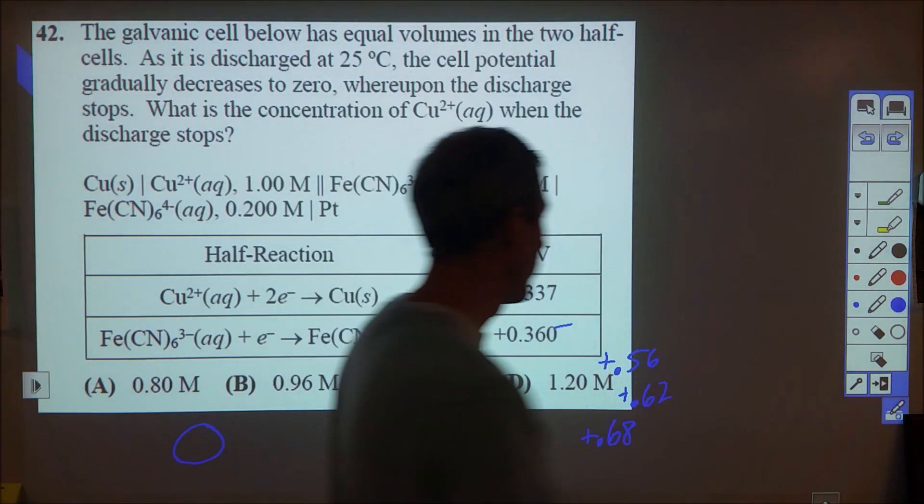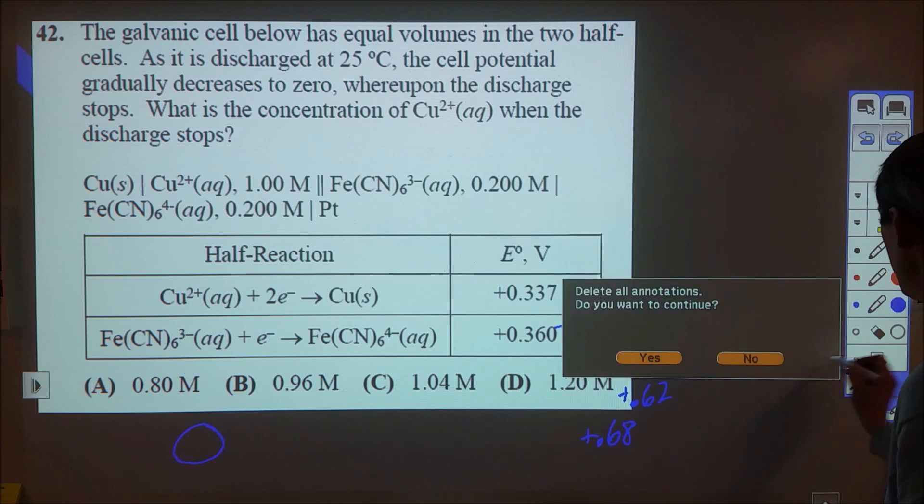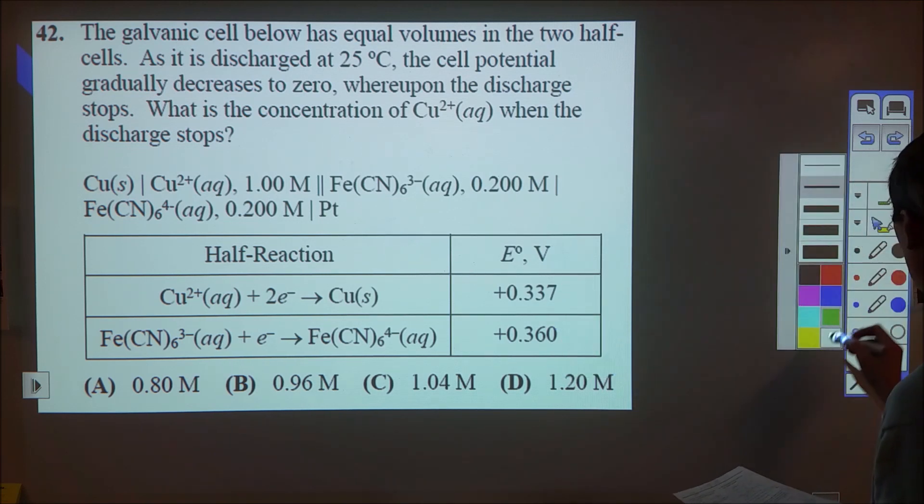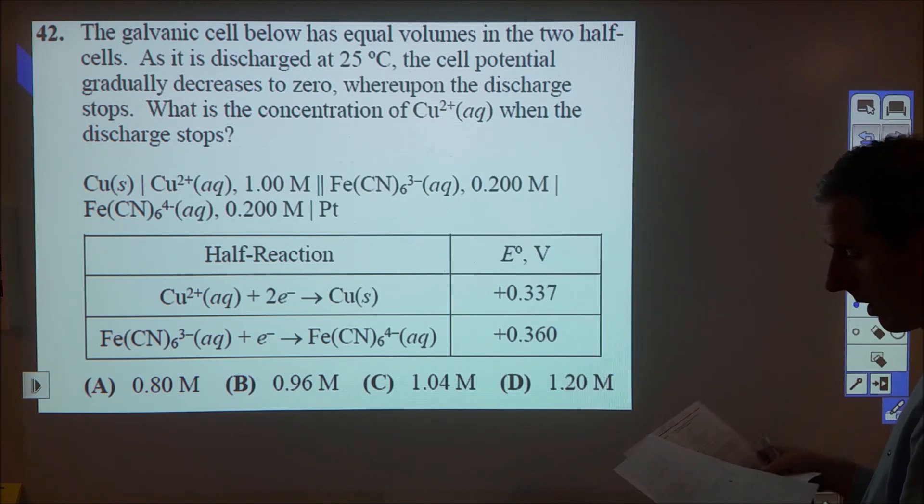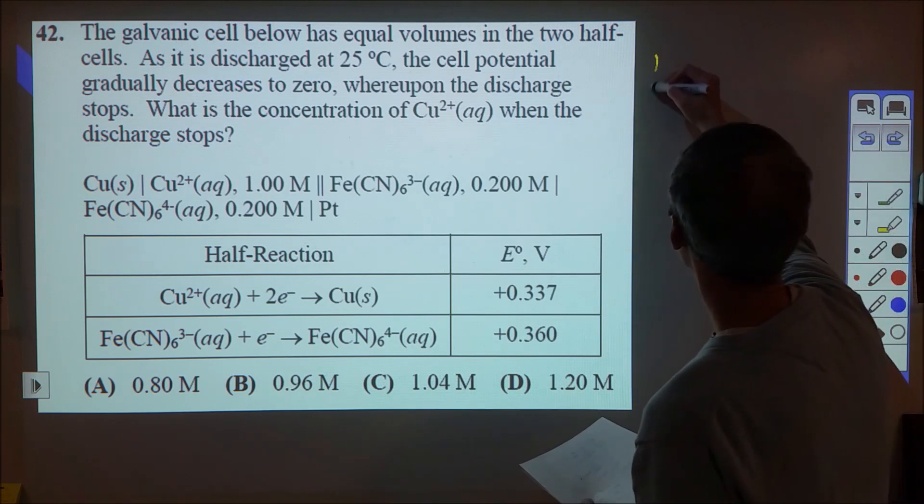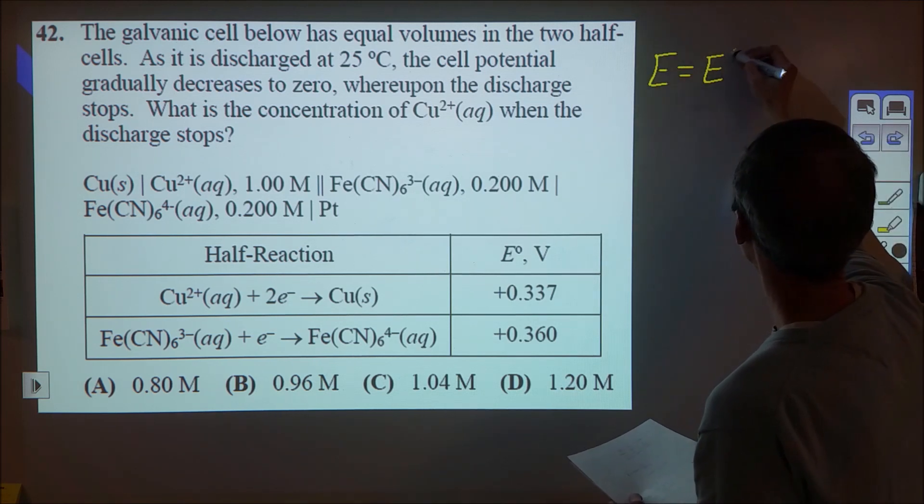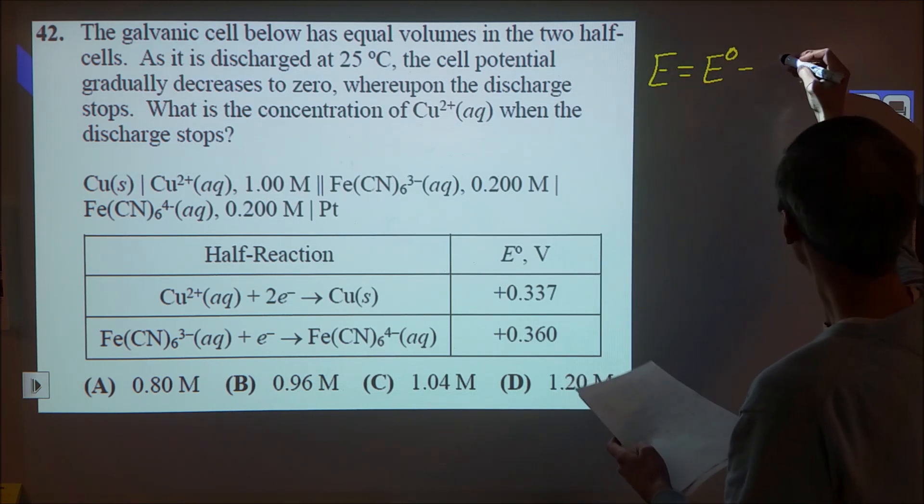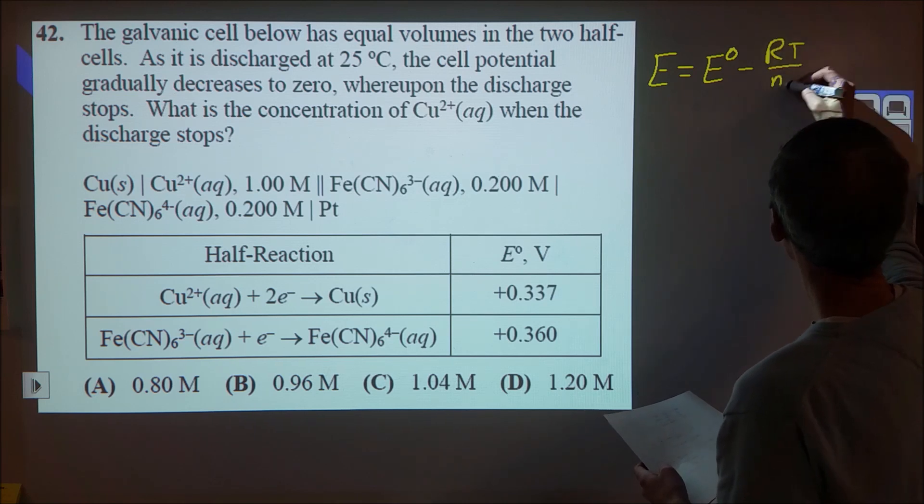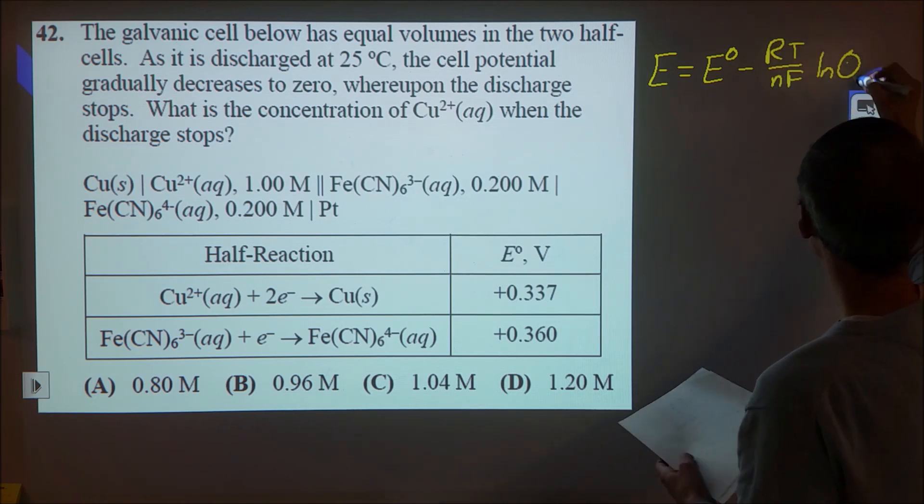Okay, 42 is a pretty challenging question, so here we're going to be looking at a couple different steps. The first step we want to do is we want to take a look at the Nernst equation. So the Nernst equation is E equals E naught minus RT over NF natural log Q.